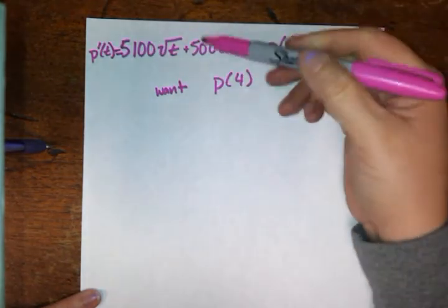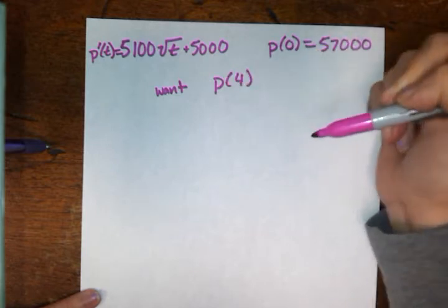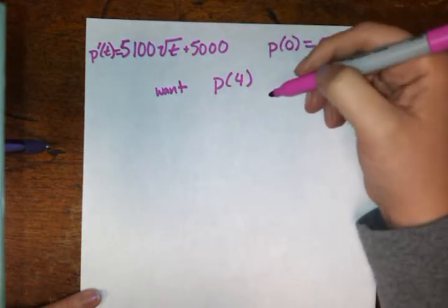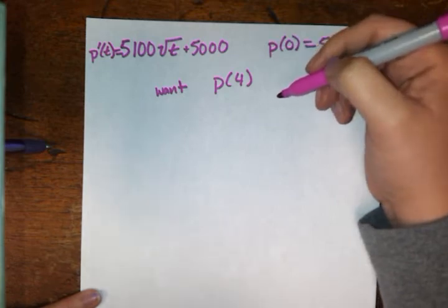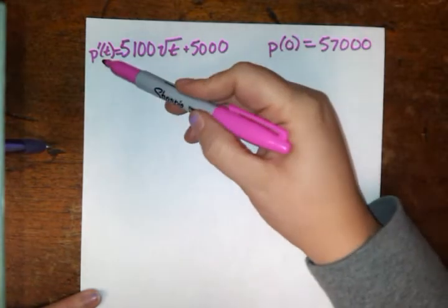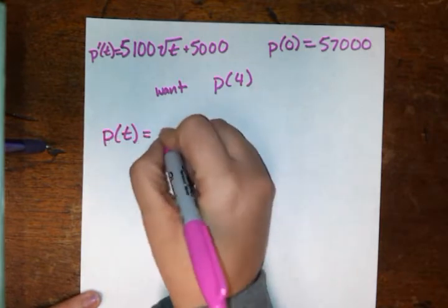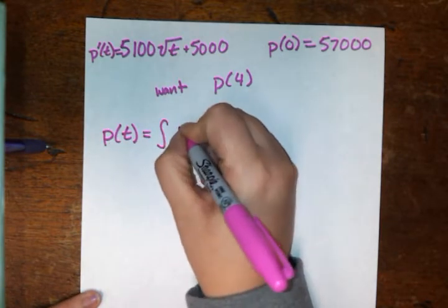Well, we want p of four, right? We want to figure out what the population is four years after the construction starts. So it's probably going to help out if we find p of t first. They give us p prime of t. Let's find p of t. And that's just going to be the integral of p prime of t.